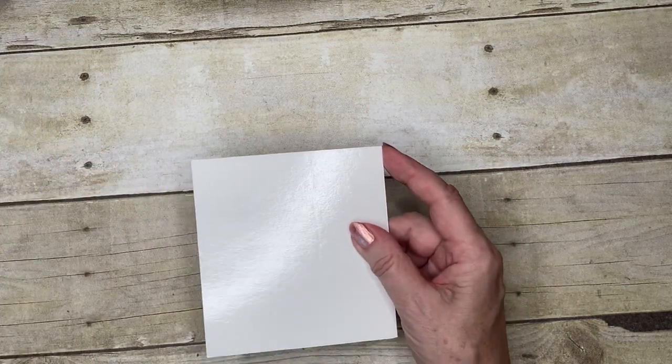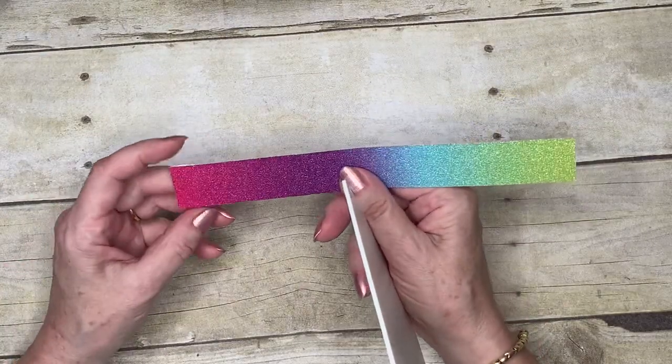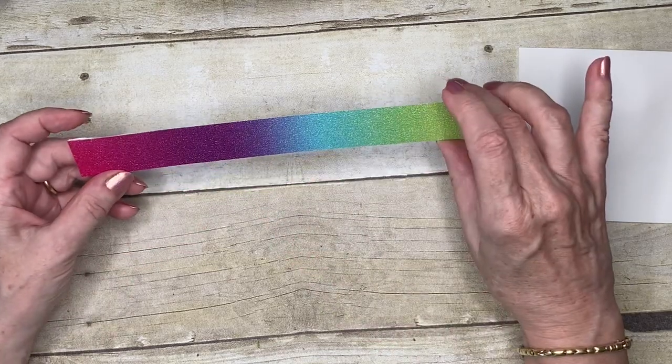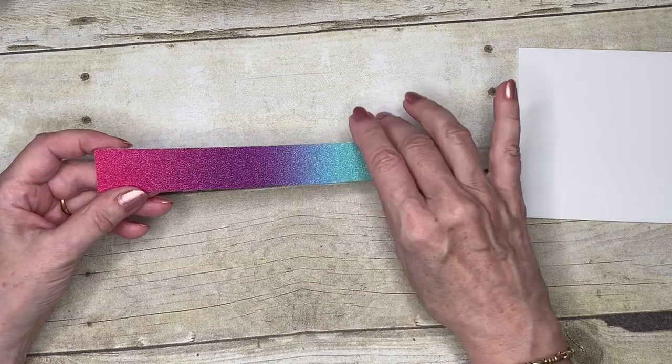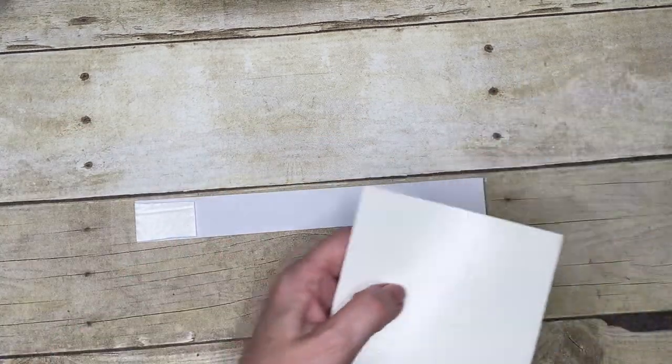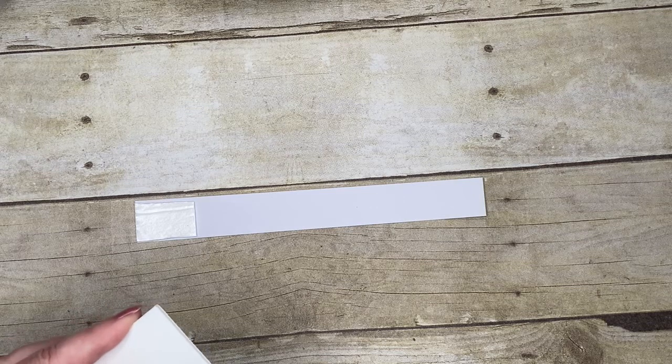So let's go ahead and make a start. So I found that it works better if you cut a length. I'm going to be using the colors going across. And then we're going to stick a piece of the adhesive foam on the back. So I'm just going to cut a piece that's roughly the width of my strip of glimmer paper.